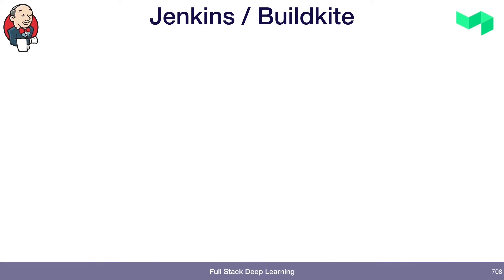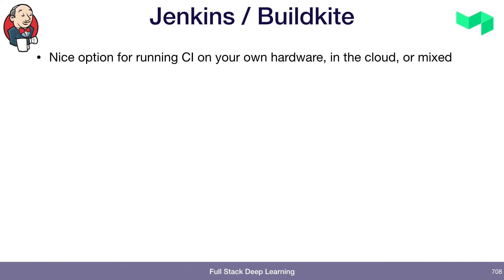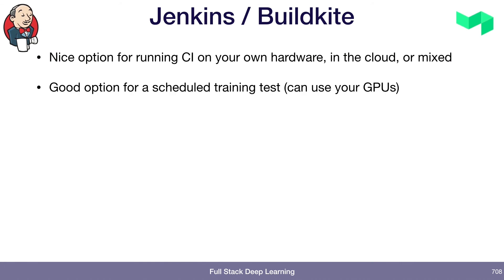Jenkins and Buildkite — Jenkins is the old school thing, still very relevant and good. It's probably used the most out of all the continuous integration tools, and it's something you install on your own servers. It's very configurable. Buildkite is a newer thing I like. It's a nice option for running it on either your own hardware, in the cloud, or partially on your own hardware and partially in the cloud. I think it's a good option for the scheduled training system test, which might take a long time and require GPUs, because you can run it on your own hardware which can have GPUs and you don't spend like a hundred dollars every single night just for running your training test.